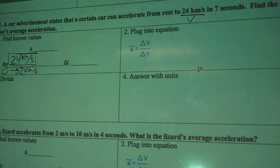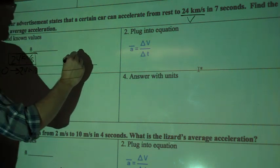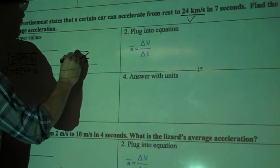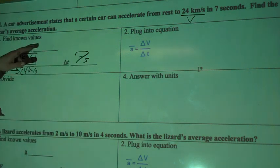Alright, and then we've got a change in time. So it says 7 seconds. We aren't given two different times we have to find the difference between, so our change in time is 7 seconds. And I don't yet know what the acceleration is. We're trying to find the car's average acceleration, so we don't know that yet.